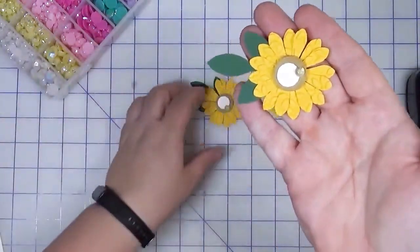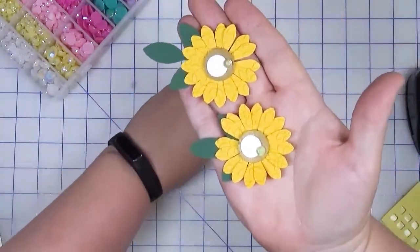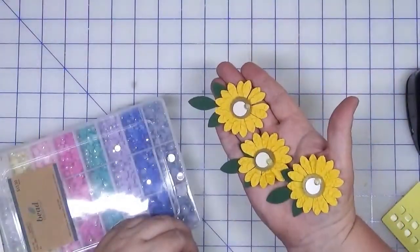And that's what these little sunflowers look like. I think they're cute and I think the embossing just adds a little bit of something to them. Let's move on to the next.